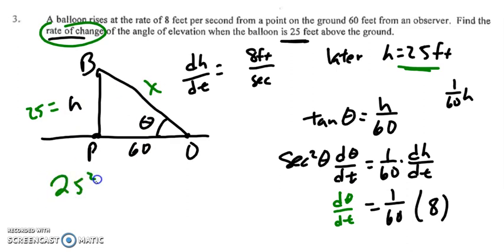25 squared plus 60 squared equals x squared. If you put that in your calculator, you should get x to be 65. Now we can figure out secant. So instead of adjacent over hypotenuse, it's hypotenuse over adjacent, so 65 over 60.